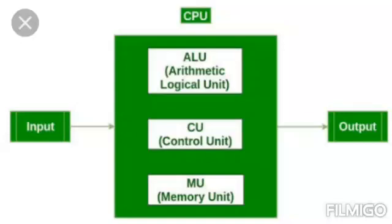For example, 2 plus 3 is input. How it processes: ALU — arithmetic logic unit, CU — control unit, MU — memory unit. It stores some data. Output is delivered. 2 plus 3, some process, and output is delivered as 5.